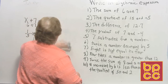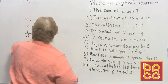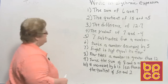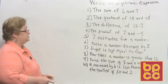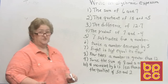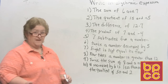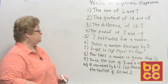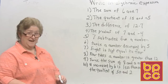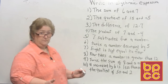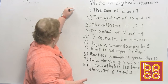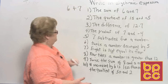Let's take a look at the first one: the sum of 6 and 7. Remember that sum means addition. So the sum of 6 and 7 would be 6 plus 7.